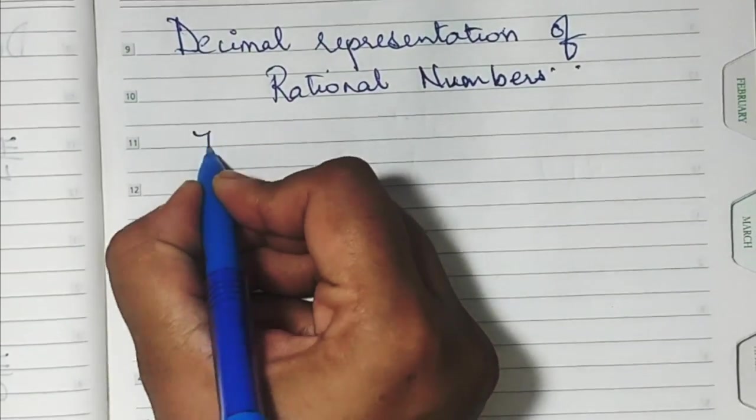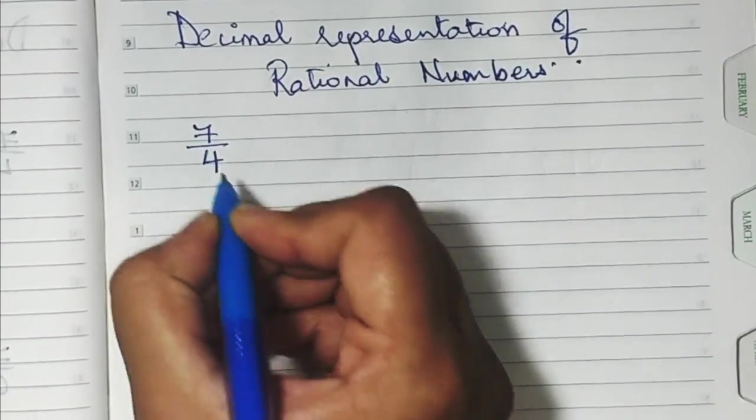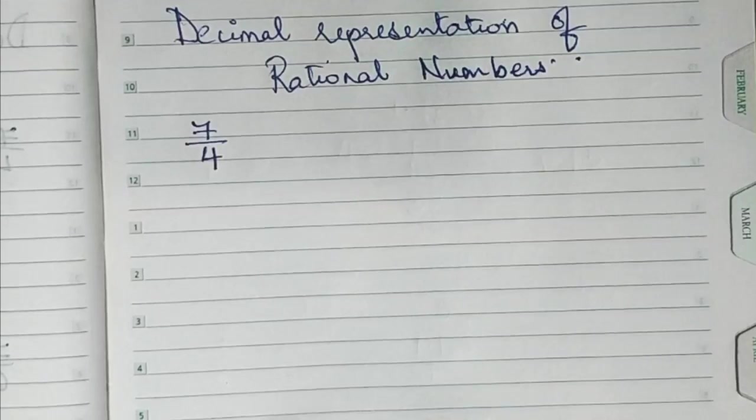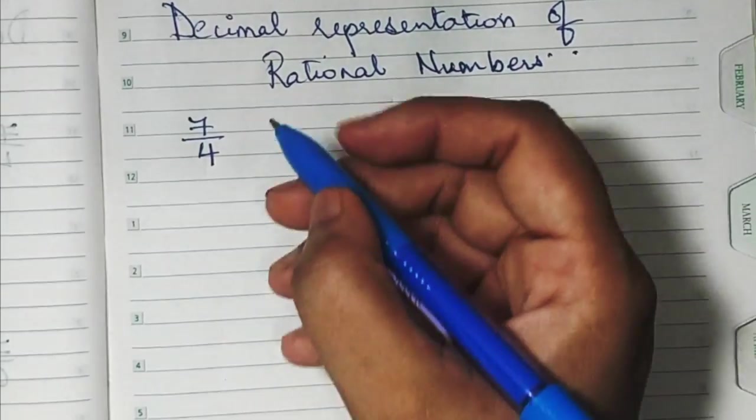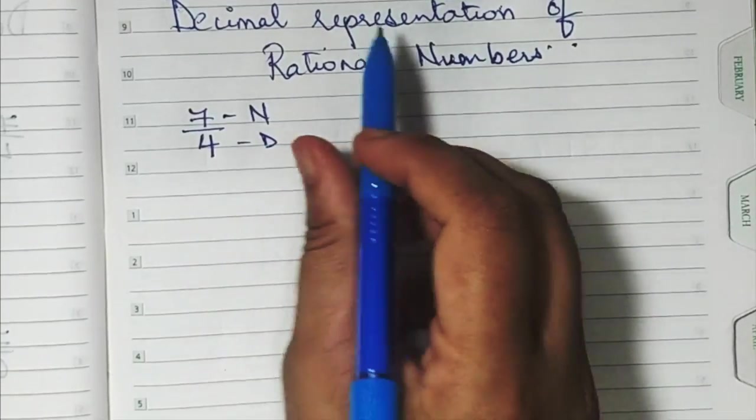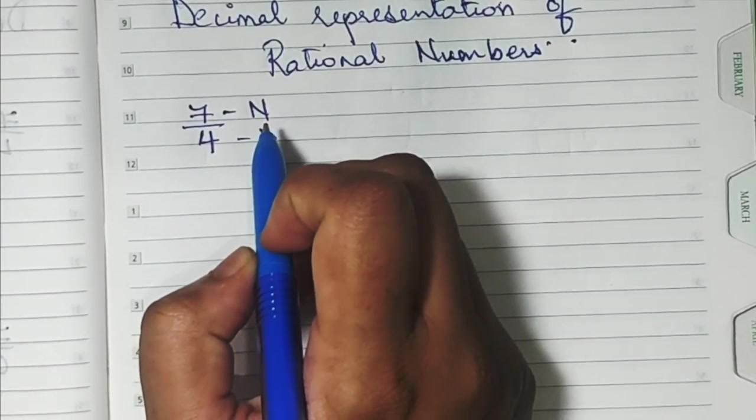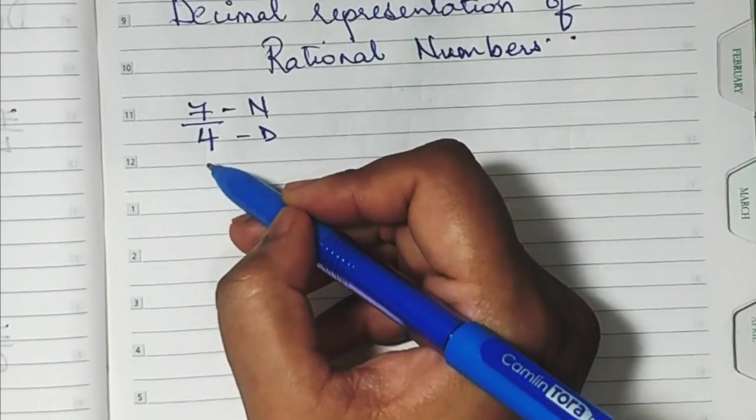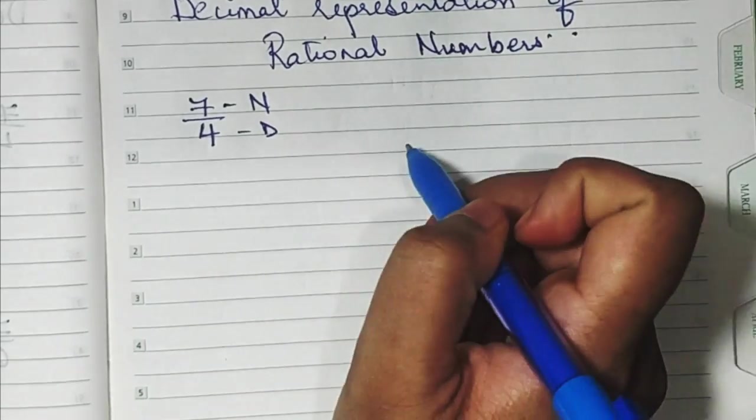Let us take an example of a rational number, say 7 by 4. When we divide the numerator of a rational number, this is the numerator and this is the denominator. When we divide the numerator of a rational number with its denominator, we get the decimal form.